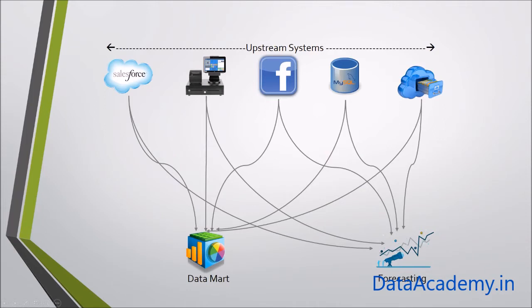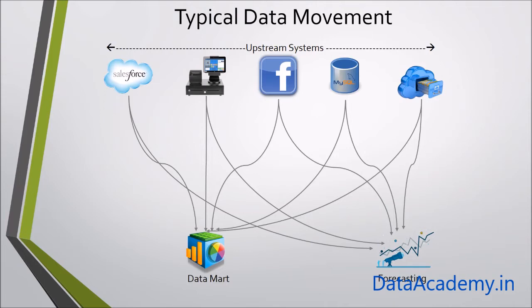This is an architecture diagram of a typical organization. Usually you have multiple upstream systems from where the data needs to be sourced into downstream systems. By upstream I am referring to all the icons at the top of the diagram, such as Salesforce, point of sale, Facebook, and so on. The downstream systems are the systems that need data to process, for example data mart and forecasting — they don't generate their own data.